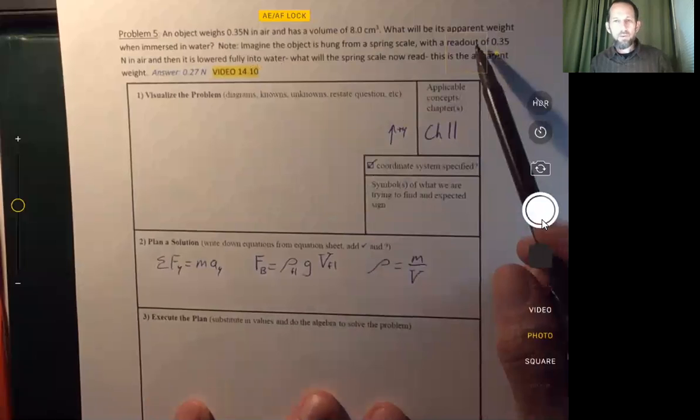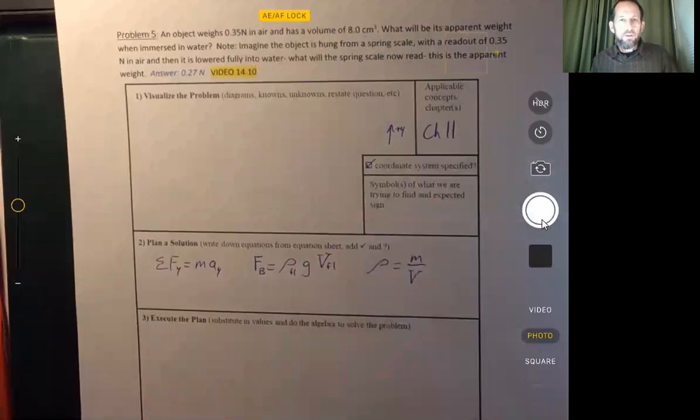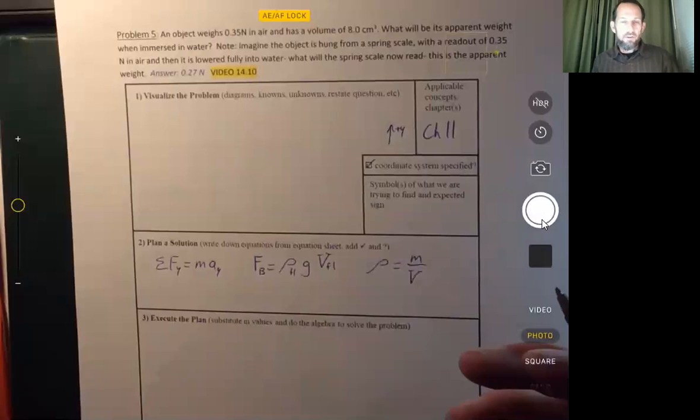So apparent weight, this should be something that perhaps is familiar to you. If you've ever been in a swimming pool and been playing around and tried to pick up one of your friends or your brother, you might have noticed that when the person is partly submerged in the water, they don't seem to weigh as much. And that's the idea behind this problem.